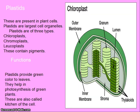Plastids. These are present in plant cells and are the largest cell organelles. Plastids are of three types: chromoplasts, chloroplasts, and leucoplasts. Plastids contain pigments. Functions of plastids: they provide green color to leaves, they help in photosynthesis of green plants, and they are also called the kitchen of the cell.